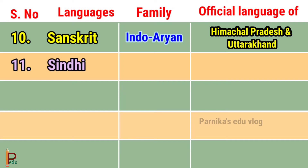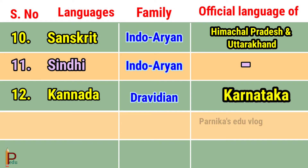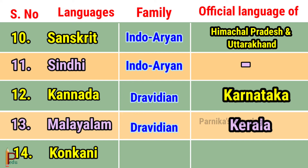Language Sindhi belongs to the Indo-Orient family but it is not the official language of any state. Language Kannada belongs to the Indo-Orient family and is the official language of Karnataka. Language Malayalam belongs to the Indo-Orient family and is the official language of Kerala. Language Konkani belongs to the Indo-Orient family and is the official language of Goa.